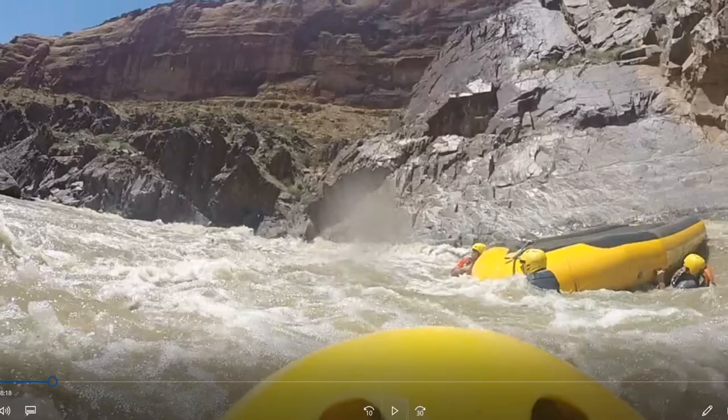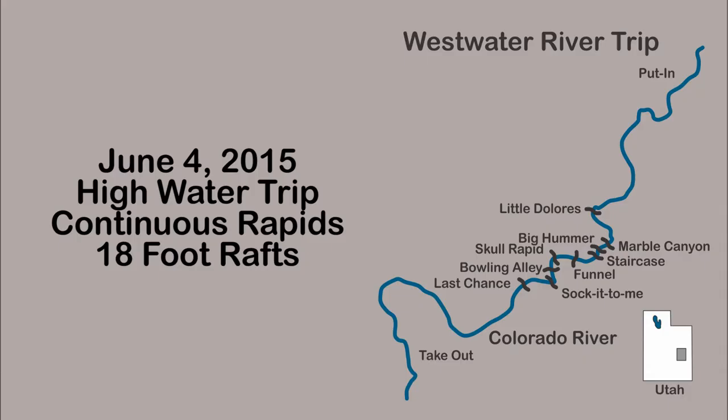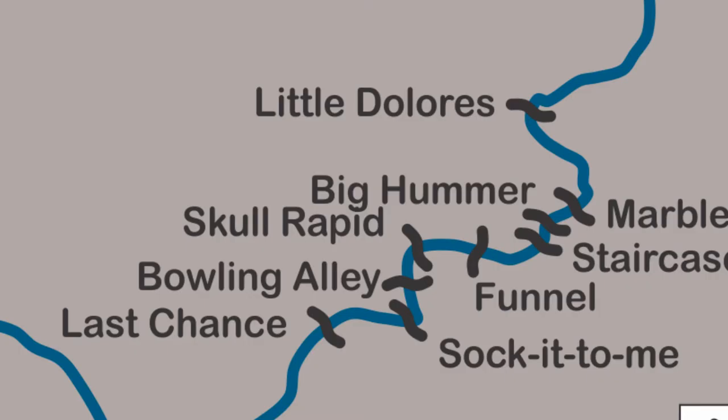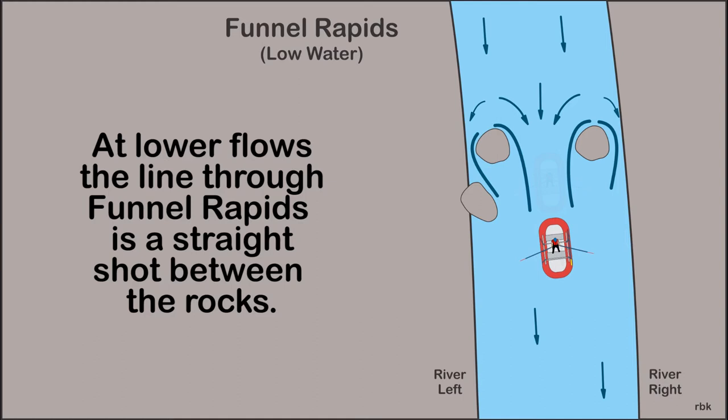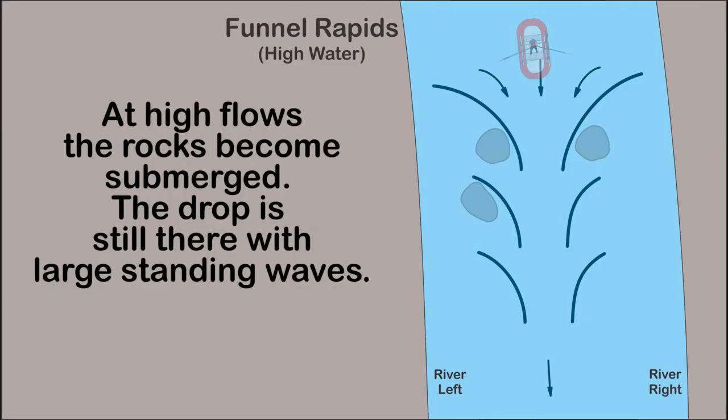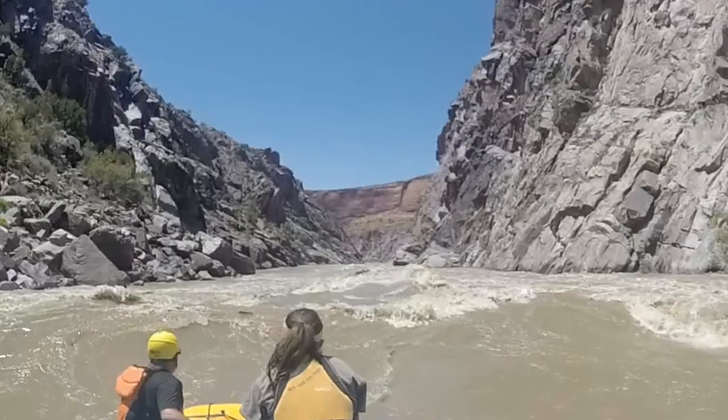At high water, over 10,000 CFS, the stretch between Funnel Falls and Skull Rapids washes out, leaving a rapid at the beginning and end, and a fairly continuous rapids with small eddies along the side. At low water, Funnel Rapids is fairly straightforward — two large rocks create a drop and funnel the water into a series of standing waves. At high water, and the day of the incident, the two rocks are washed out and the drop remains with a series of large standing waves created.